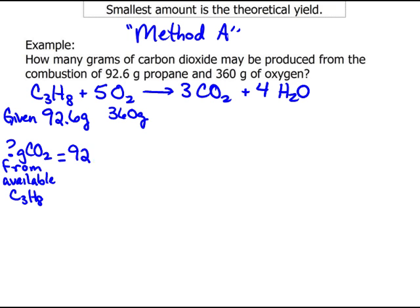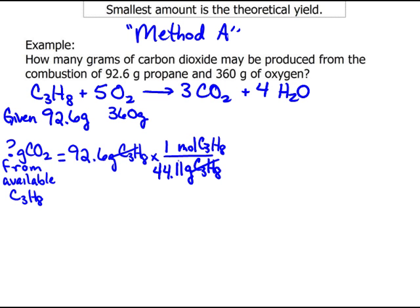So the available is the 92.6 grams of the propane that I'm given. I need to convert that into moles. Grams to moles, I'm going to use the molecular weight. So I need to put grams on the bottom so it will cancel and divide out, and moles of C3H8 on top. Now grams per mole for propane, that's three twelves plus eight. That's going to be 44.11 grams per mole. I use the periodic table to figure out the molecular weight.